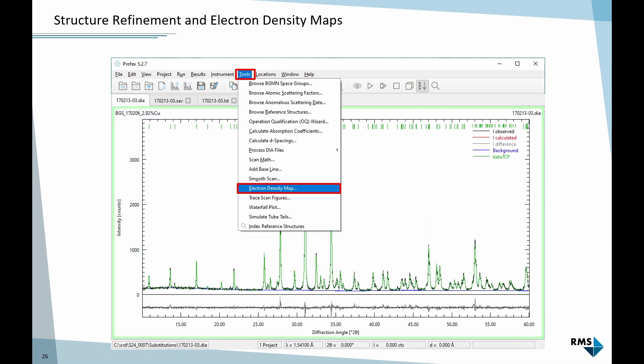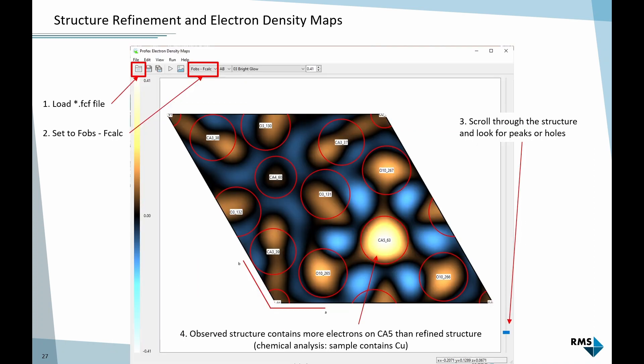By right-clicking on the structure in the SAF file and selecting add res out and fcf out file, this will add two lines. Then I repeat the refinement. The fit will be the same because I have not changed anything except instructed BGMN to generate two more output files. Then I go to tools and select electron density map, and this will open an editor.